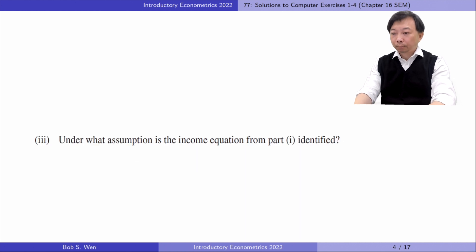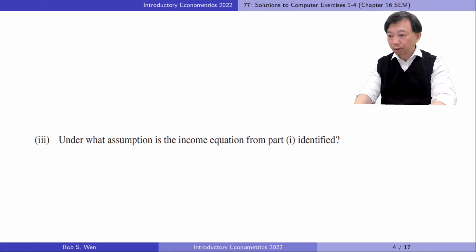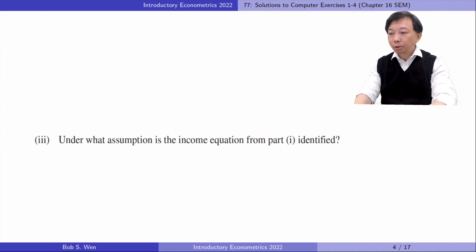In Part 3, under what assumption is the income equation from Part 1 identified? Under the assumption that cigarette price or restaurant smoking restriction has a partial effect on cigarette demand in equation 2, and they do not appear in the income equation 1. In Part 4, we can use the two excluded exogenous variables as instrumental variables for cigarettes smoked per day in the income equation, and consistently estimate the income equation by two-stage least squares.